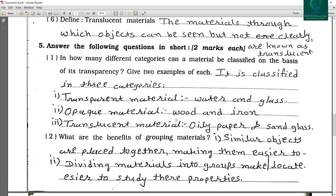Opaque material, wood and iron. Translucent material, oily paper and sand glass.